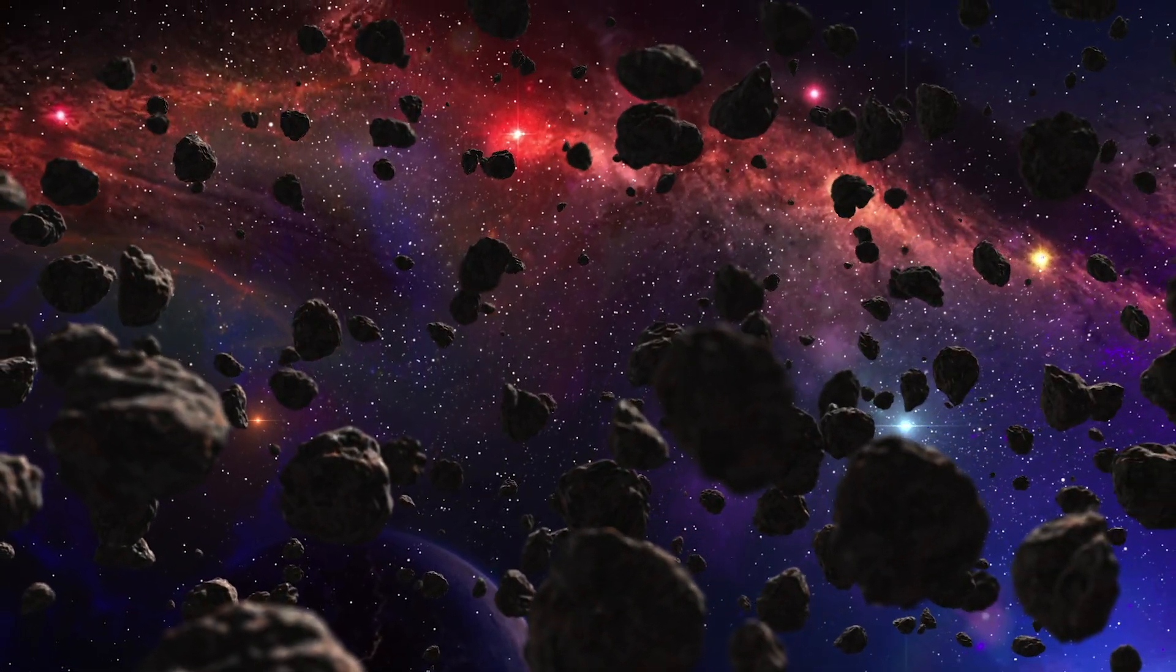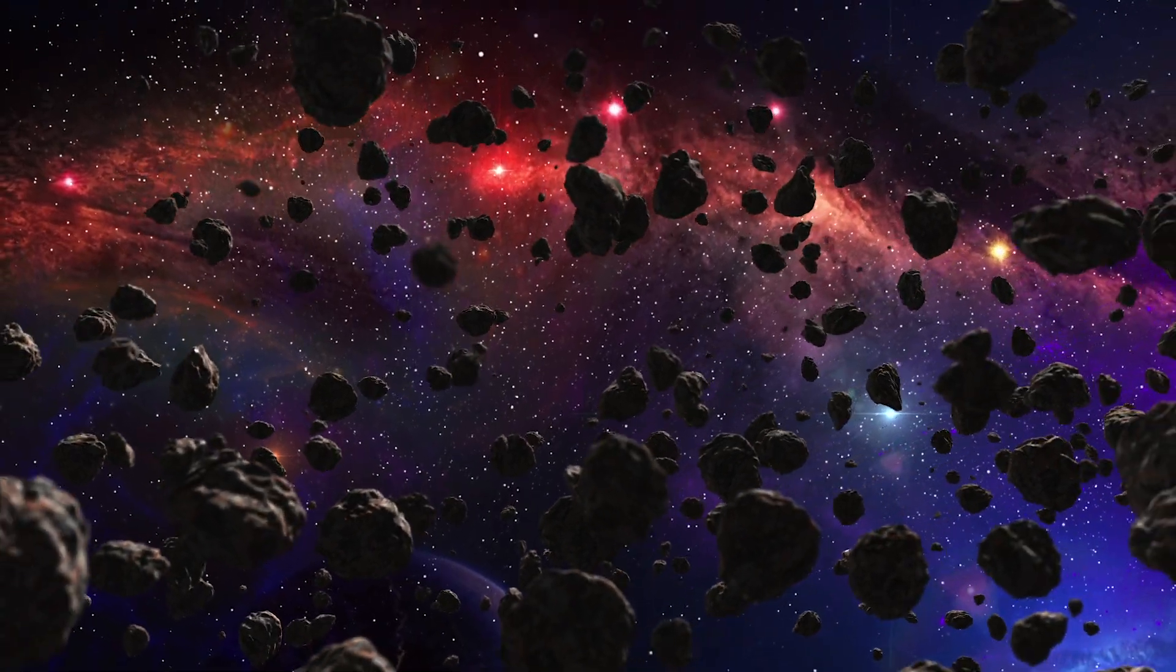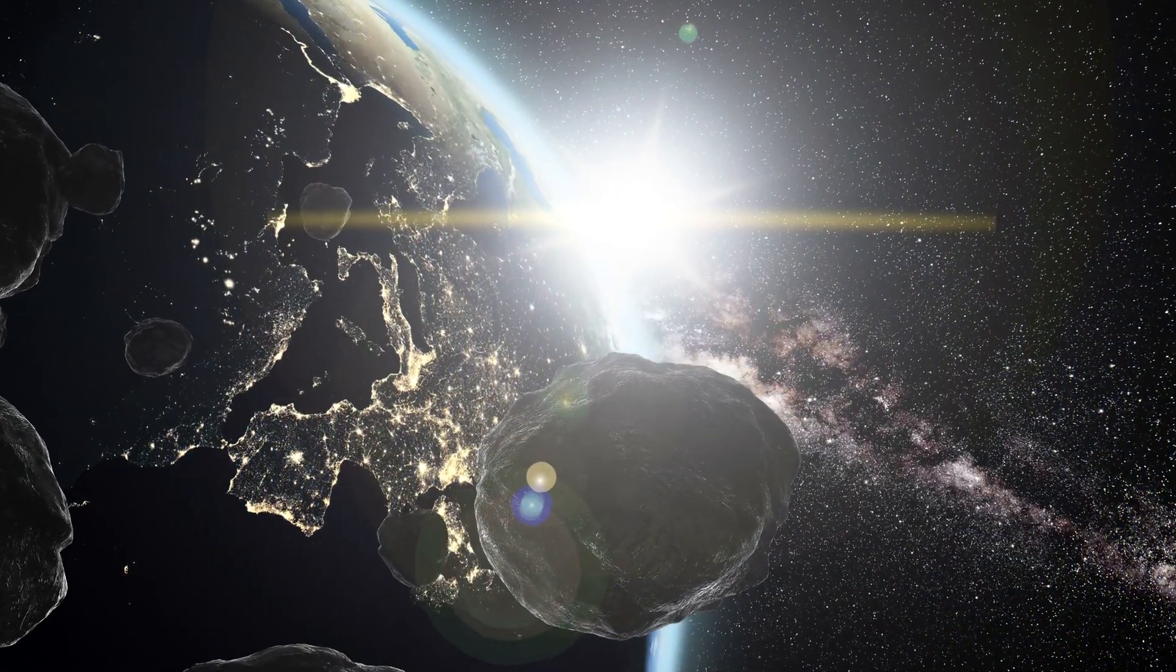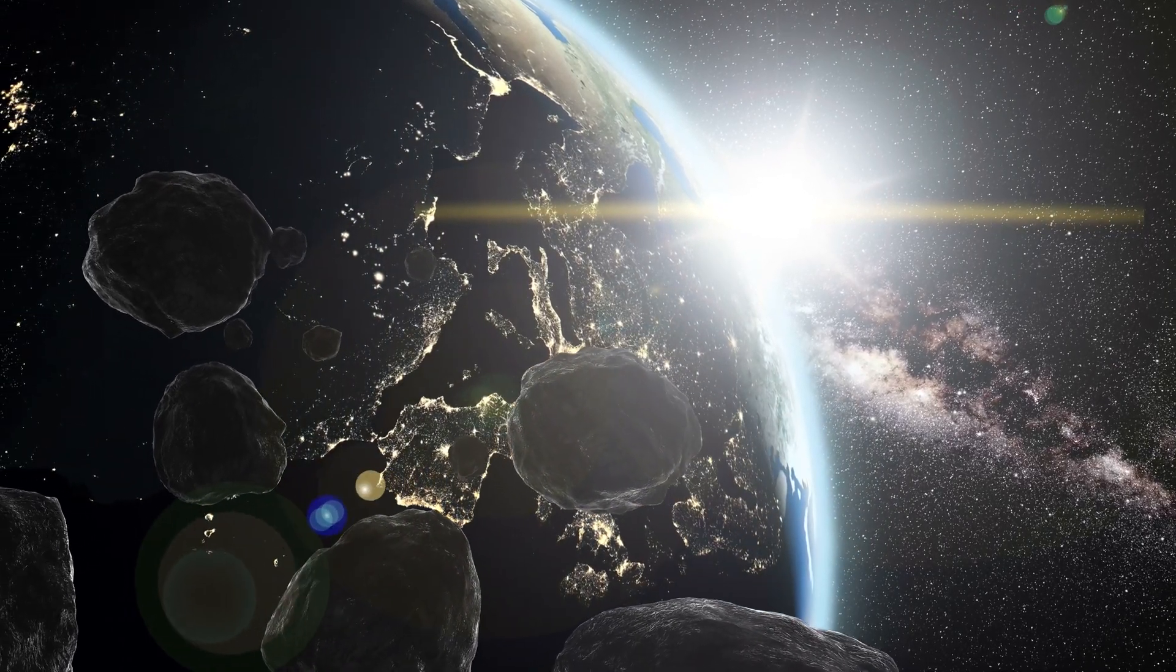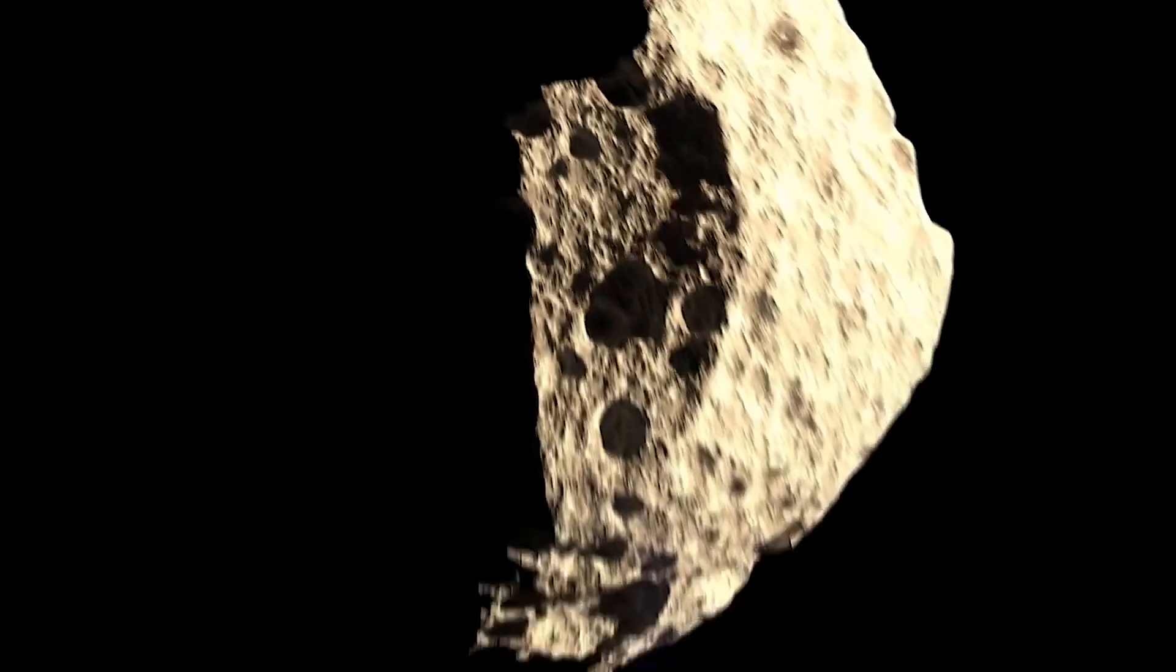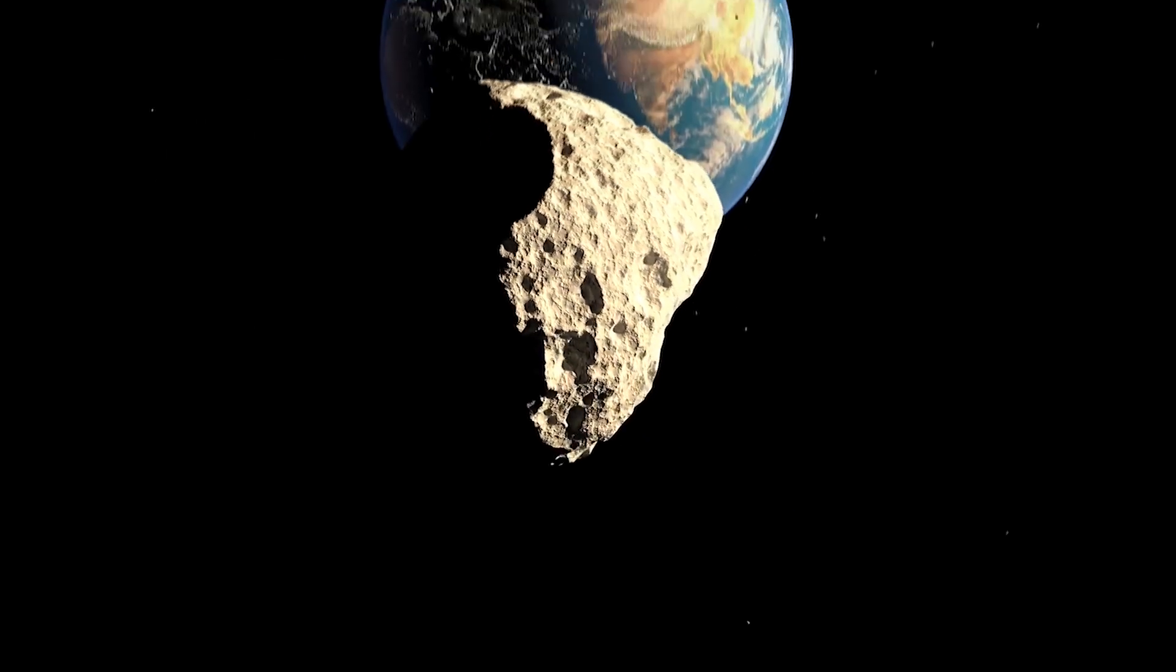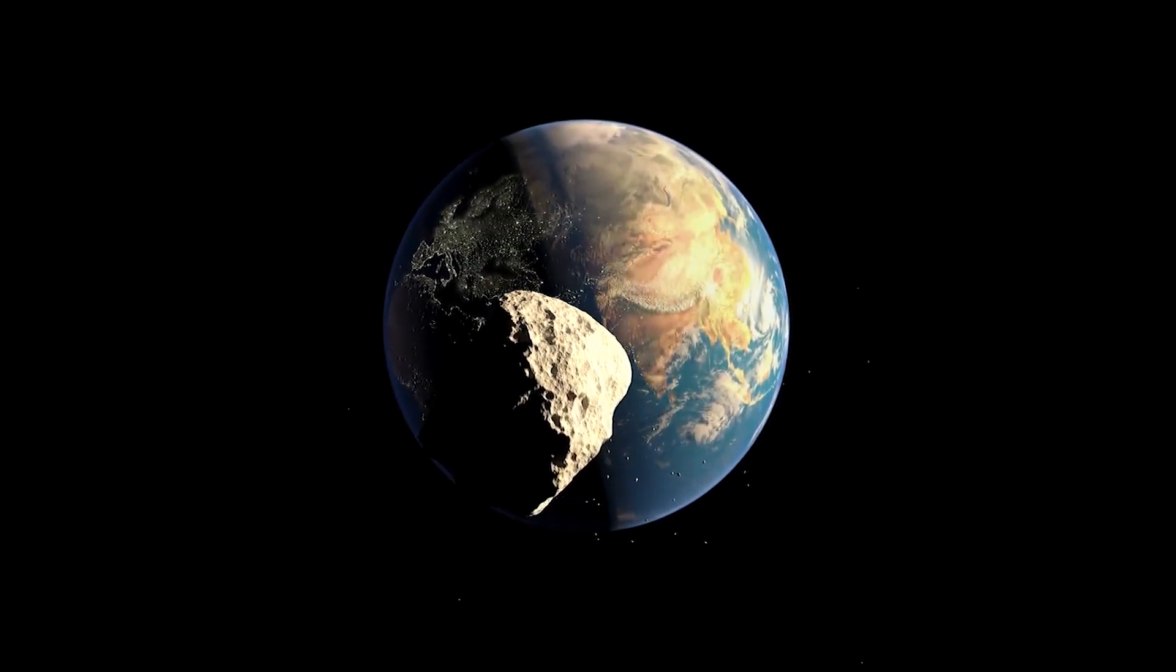These are the same systems that help us spot potentially hazardous asteroids, so they're crucial for keeping an eye on our cosmic neighborhood. The fact that we can spot these tiny objects, remember, mini-moons are typically only a few meters across, is a testament to how far our astronomical technology has come.